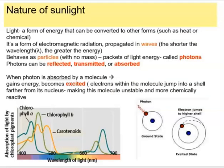To understand photosynthesis, we need to understand the nature of sunlight. It's a form of electromagnetic radiation that comes in waves and behaves as particles. These little packets of light energy are called photons. Chlorophyll can absorb photons, reflect, or transmit them. When a molecule absorbs a photon, the electrons get excited — they jump to a higher shell away from the nucleus.